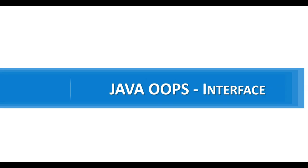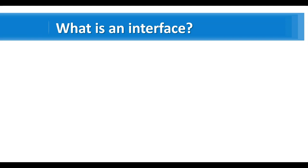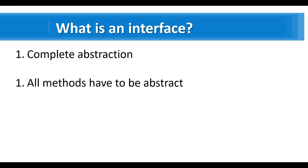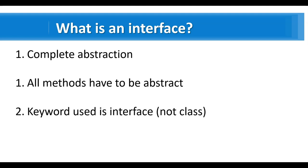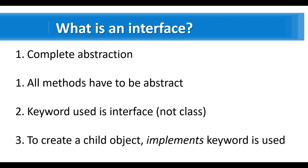Hello everyone, welcome back. In this section we will look at interfaces. What is an interface? It helps with complete abstraction — all methods have to be abstract. The keyword used is 'interface' and not 'class'. To create a child object of an interface you have to use the 'implements' keyword instead of 'extends'. This is a very high-level definition, but let's try to understand why we need an interface.